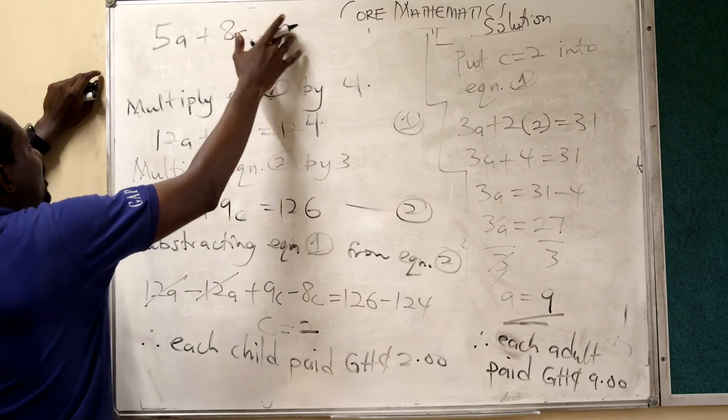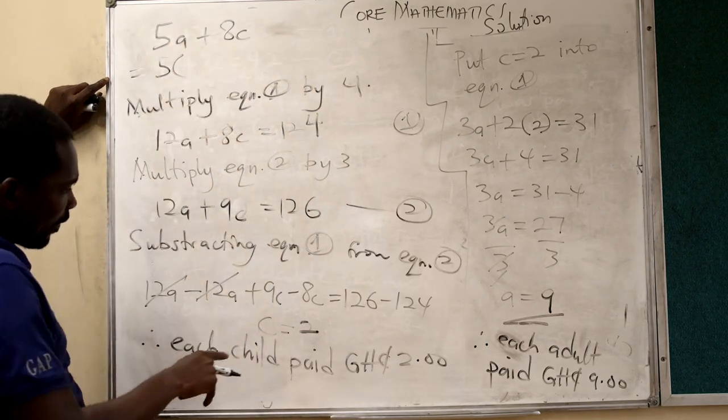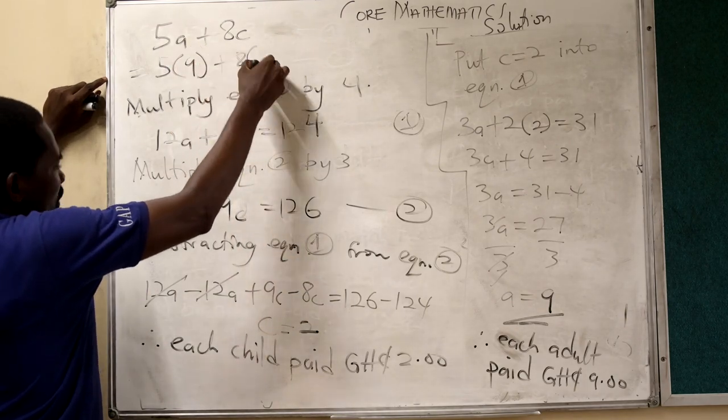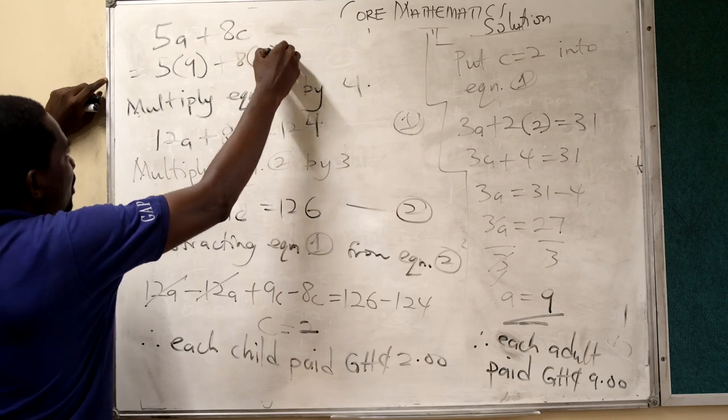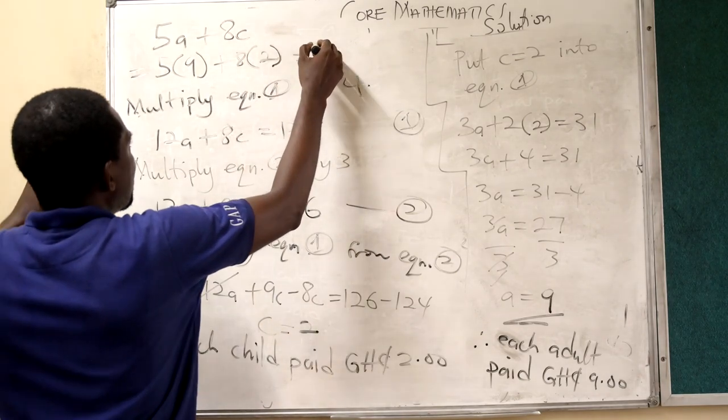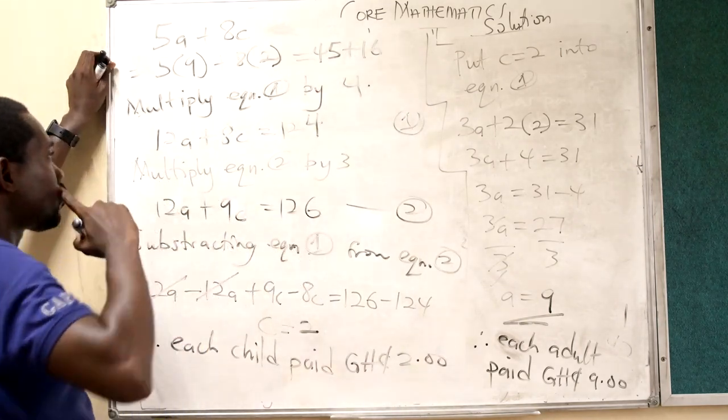Alright. So, this is actually going to be, in fact, each adult pay nine cedis. And each child pay two cedis. So, that is five times nine, which is 45, plus, eight times two, which is 16.